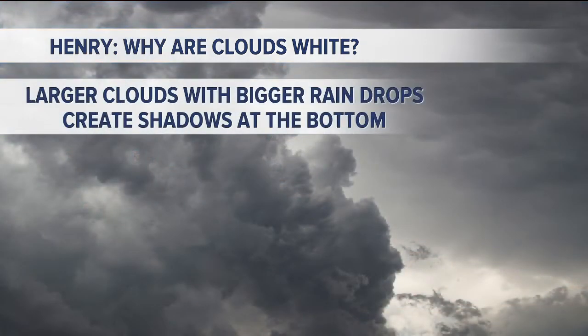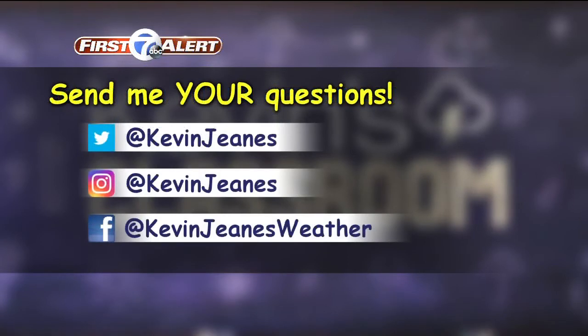So that's why clouds appear white. And then sometimes you see the darker clouds. That's when the water droplets are bigger and the clouds are much taller, so less light reaches the bottom. Basically, you have shadows at the bottom of the clouds, and that's why rain clouds appear darker.